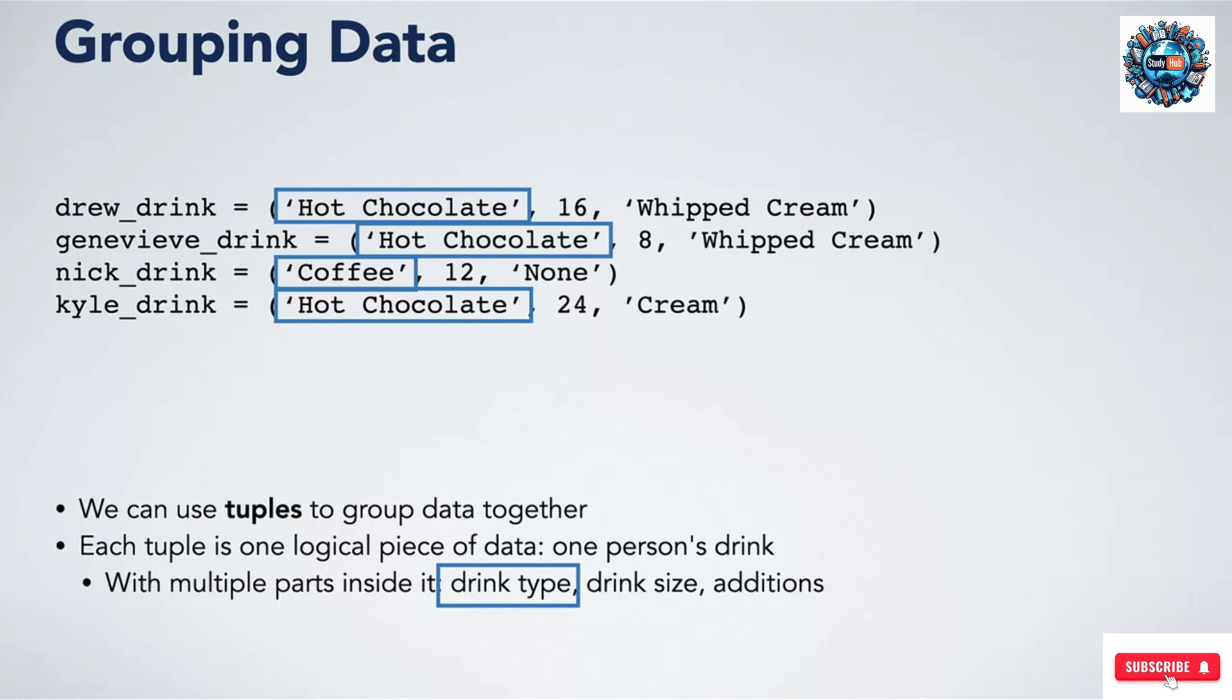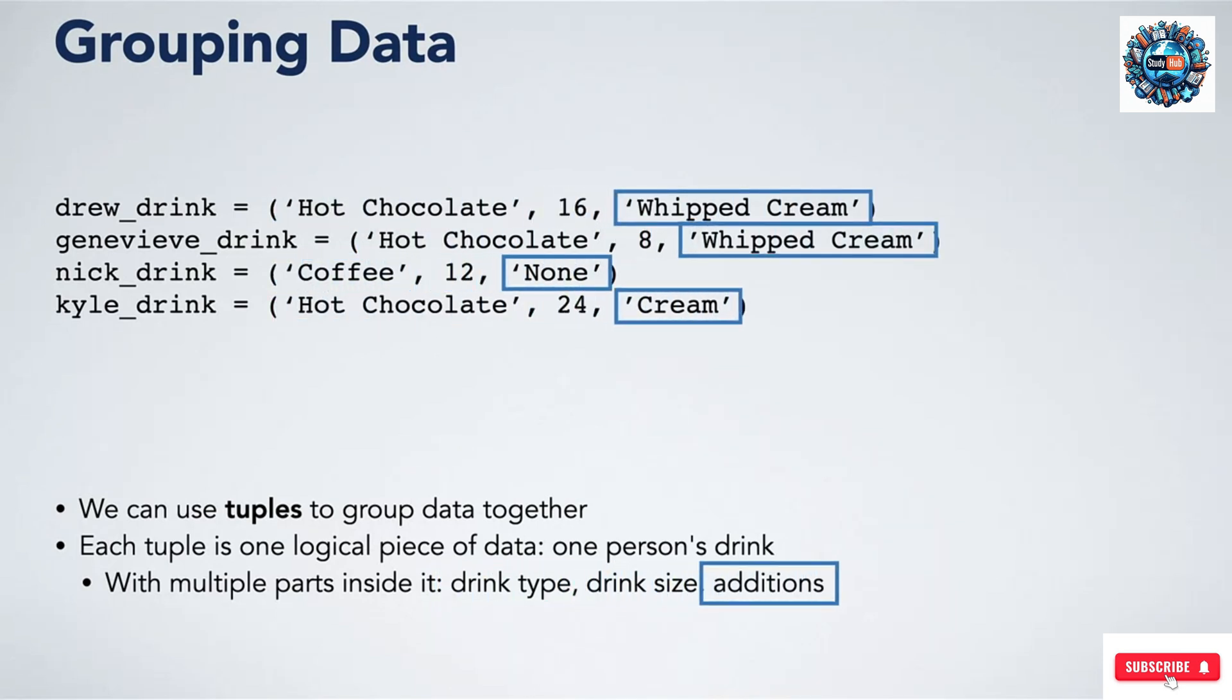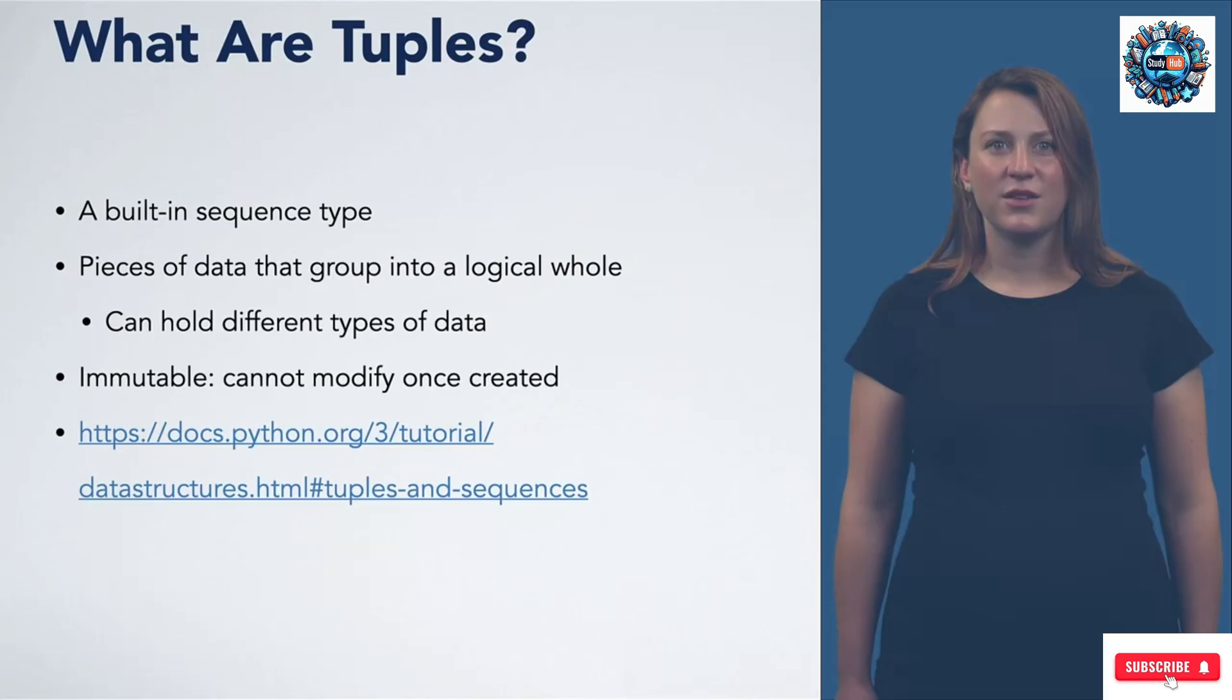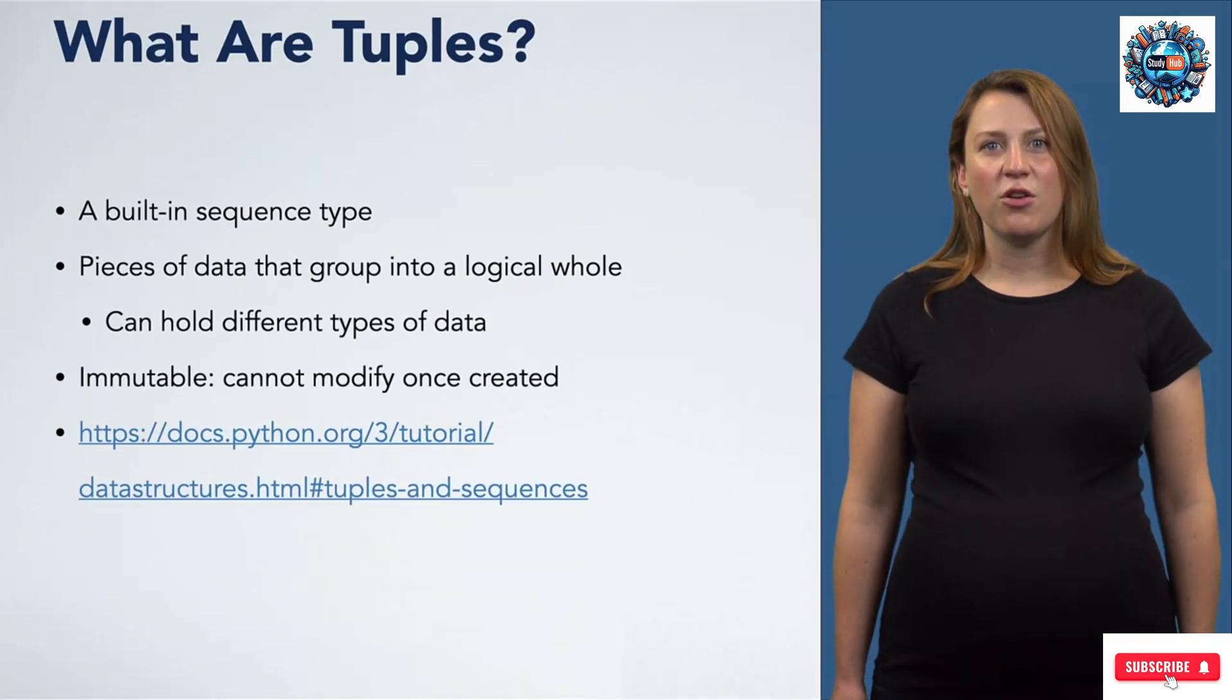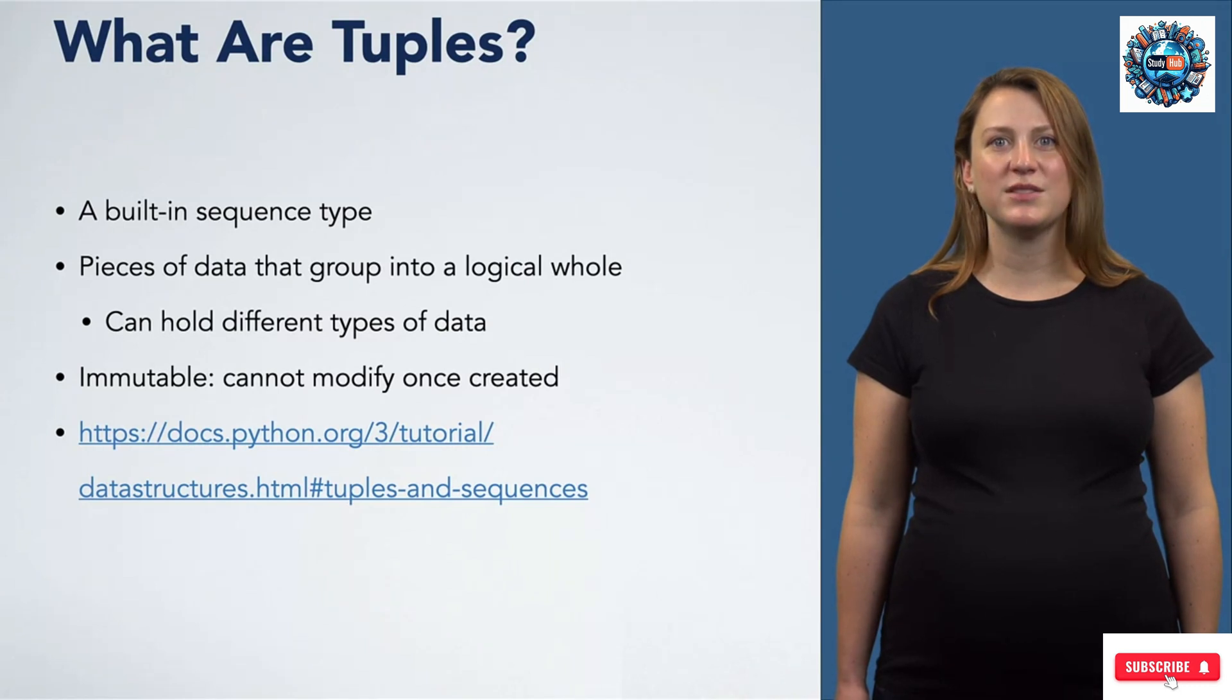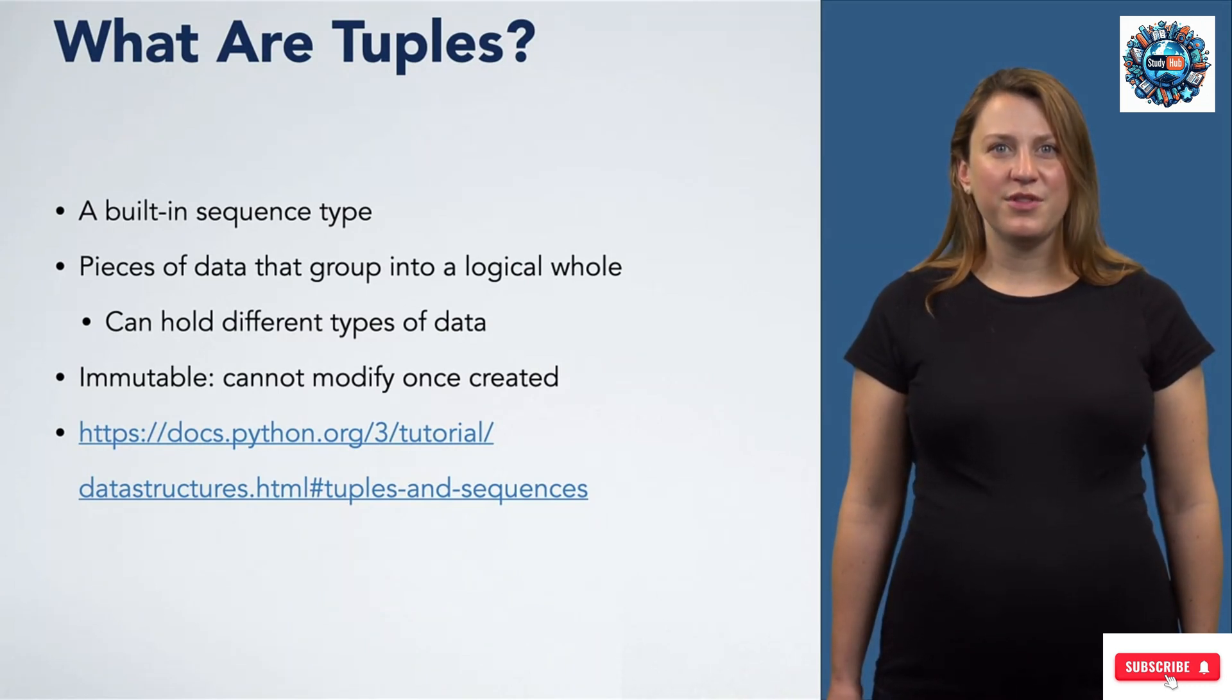Drink type is first for all of our tuples, followed by drink size, and last, any additions. So what are tuples? They are a built-in sequence type in Python, and they're typically used for grouping together pieces of data that go together to form some logical larger element. In our previous example, this was the different aspects of a drink choice being grouped together to completely describe the choice.